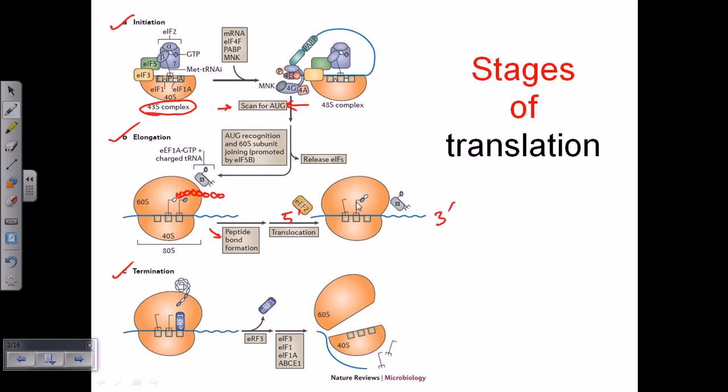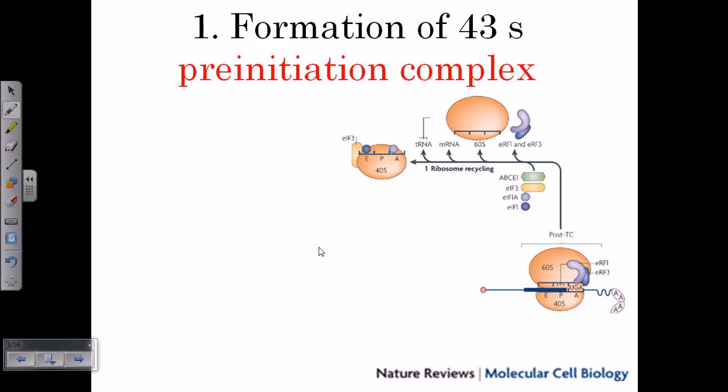Once we know these different stages of translation, it's time to look at each in more detail. Let's talk about the first stage — the initiation of eukaryotic translation. The initiation phase for eukaryotic translation is the most important and most complicated phase of the entire process. I divide this initiation process into four different parts: first, assembly of factors to form the pre-initiation complex, called the 43S pre-initiation complex.